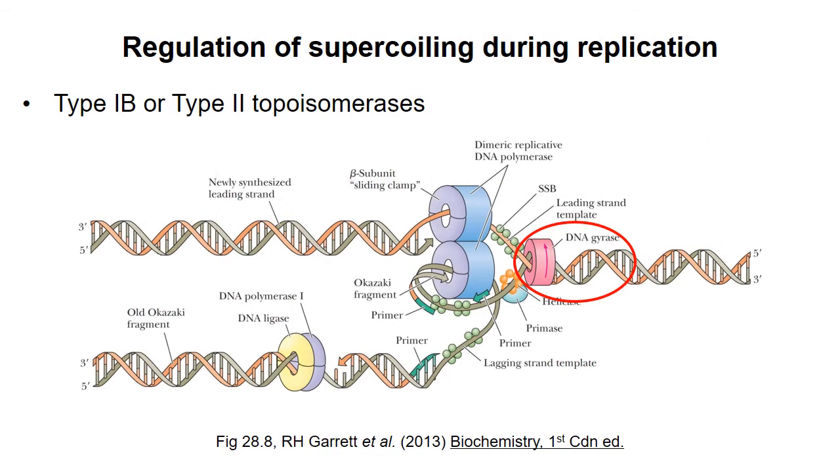If this supercoiling were not relieved or resolved, then it would accumulate to the point where helicase would not be able to continue separating the two strands, and replication would stop.